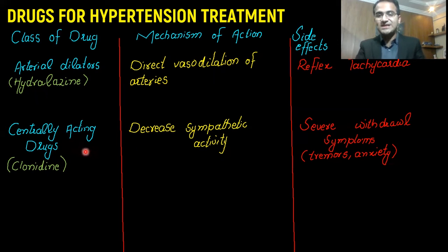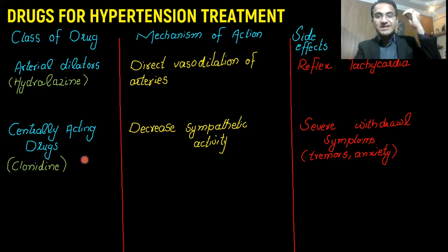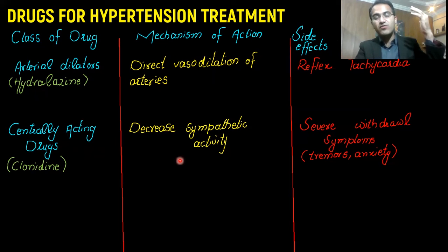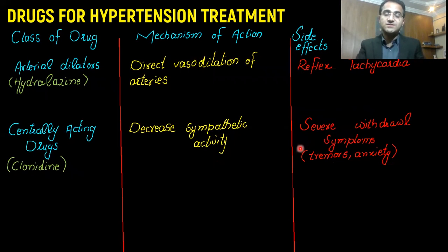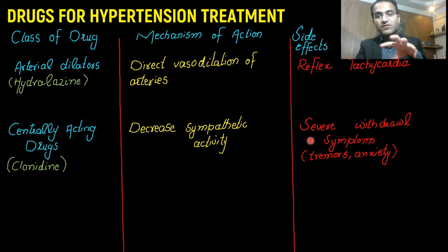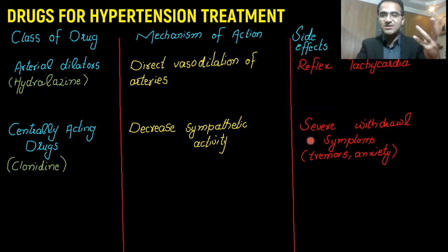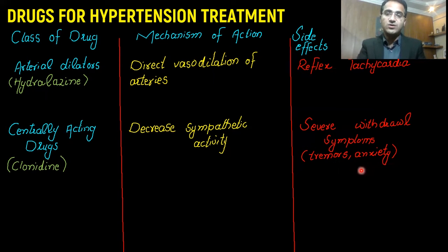Then we have centrally acting drugs, which include clonidine. These drugs cause decreased sympathetic outflow from the brain, which leads to decreased sympathetic activity, resulting in lower blood pressure due to vasodilation. However, clonidine has severe withdrawal symptoms — since it decreases sympathetic activity, if it is suddenly stopped, the patient develops very high sympathetic activity, resulting in tremors and anxiety.